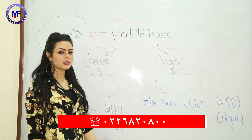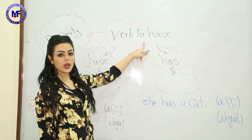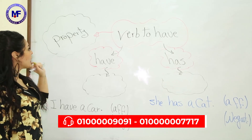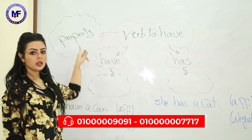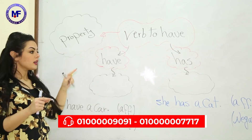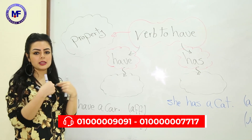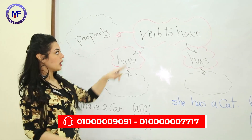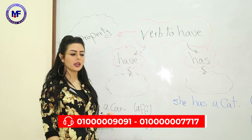When can we use it? We use the verb 'to have' if we want to express property. Property means this thing belongs to me — it's mine — so I use the verb 'to have'.